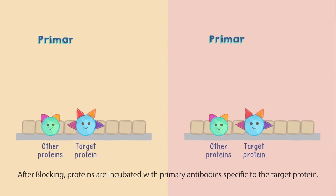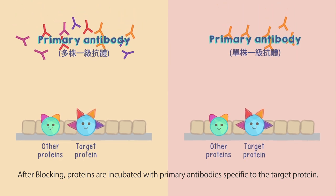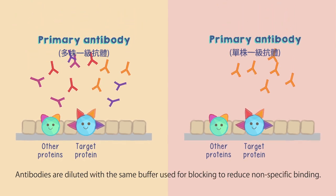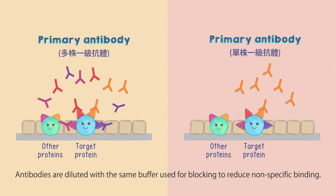After blocking, proteins are incubated with primary antibodies specific to the target protein. Antibodies are diluted with the same buffer used for blocking to reduce non-specific binding.